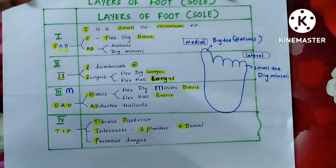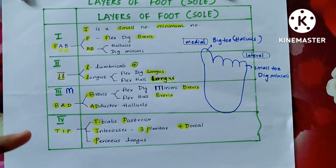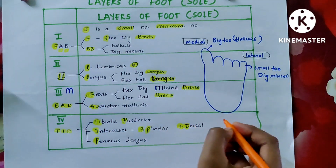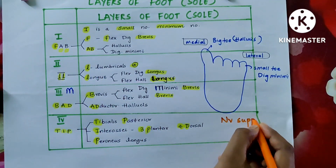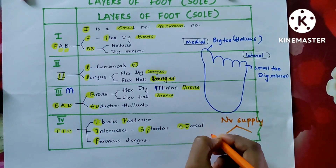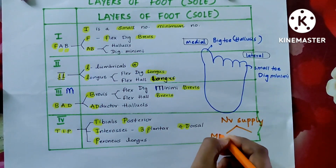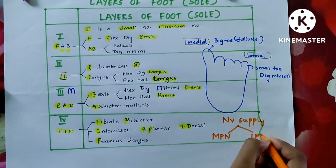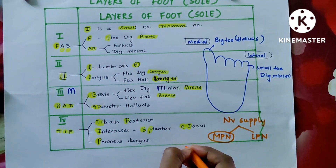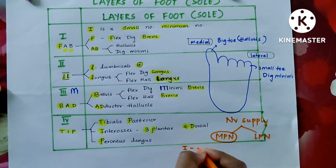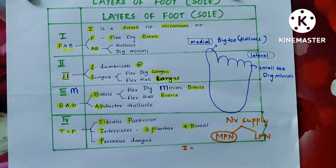Now let us discuss the nerve supply of the individual muscles of the layers of the foot. You have to divide it into medial plantar nerve (MPN) and lateral plantar nerve (LPN). The medial plantar nerve supplies the medial side muscles, that is towards hallucis, and the lateral plantar nerve supplies towards the digiti minimi side.